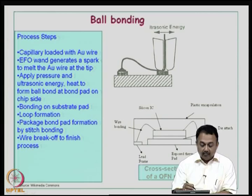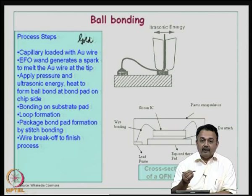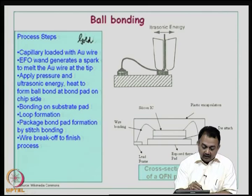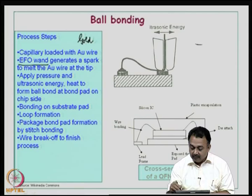The capillary is loaded with the gold wire depending upon the thickness you want, ranging from 50 microns to 300 microns depending upon the bond pad area available and the peripheral number of connections. You can create an electronic spark — an electronic flame of wand will generate a high voltage spark that will melt at the tip of the gold wire to form a ball. I will show you a video clip, but basically there will be a wand and the wire coming out — this will melt the wire to form a ball.